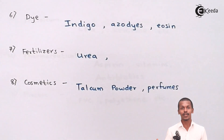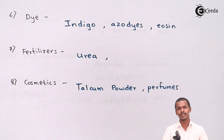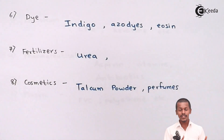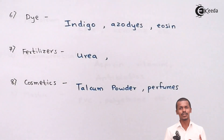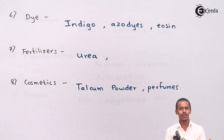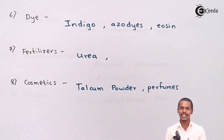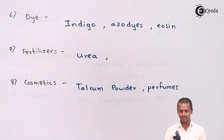Talking about fertilizers — the most common fertilizer used in crop cultivation is urea. Fertilizers provide nutrients to plants and crops so as to get healthy food, and these fertilizers are also organic compounds.